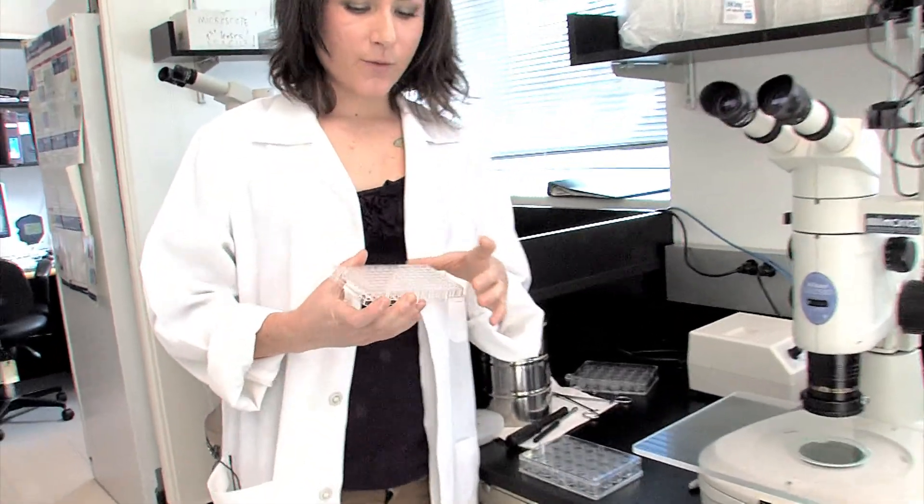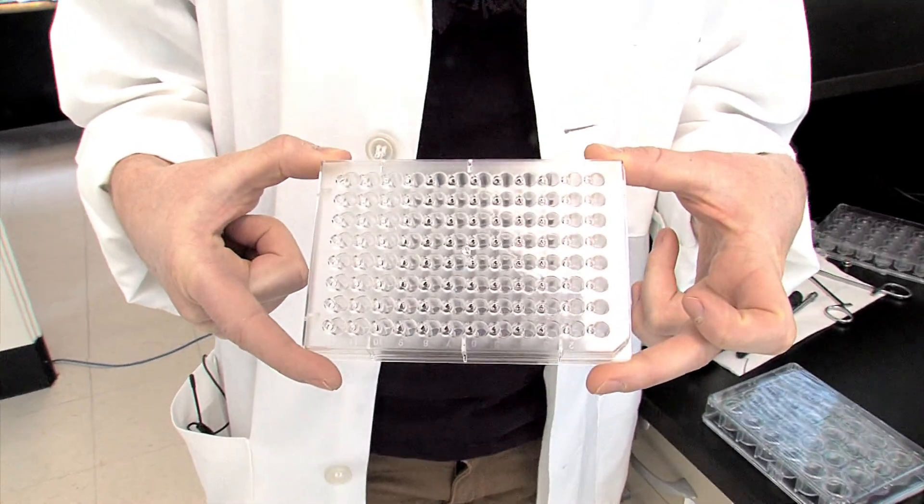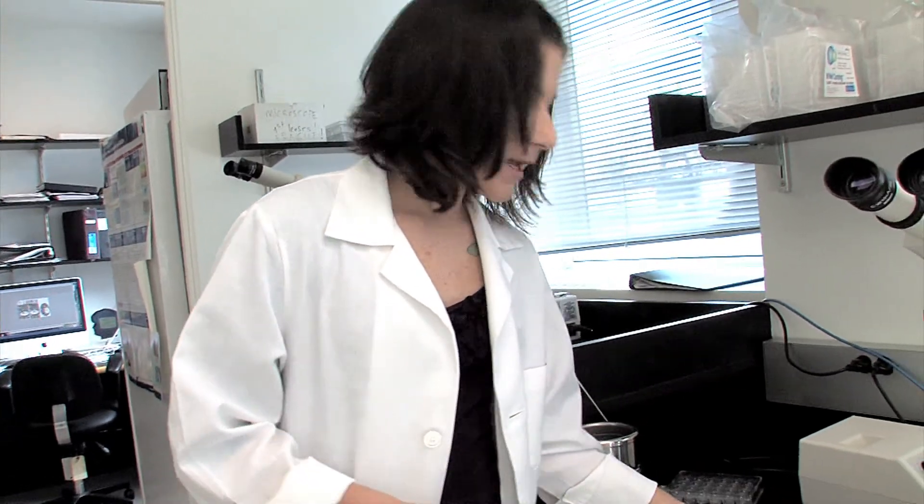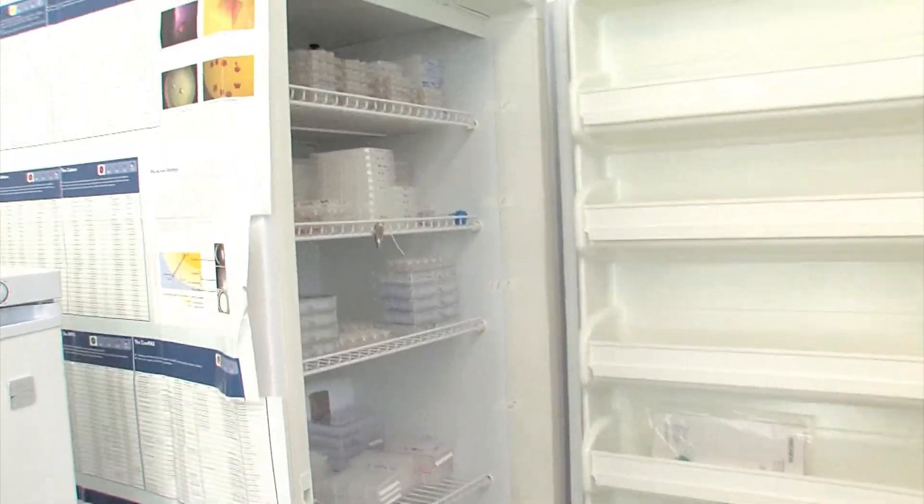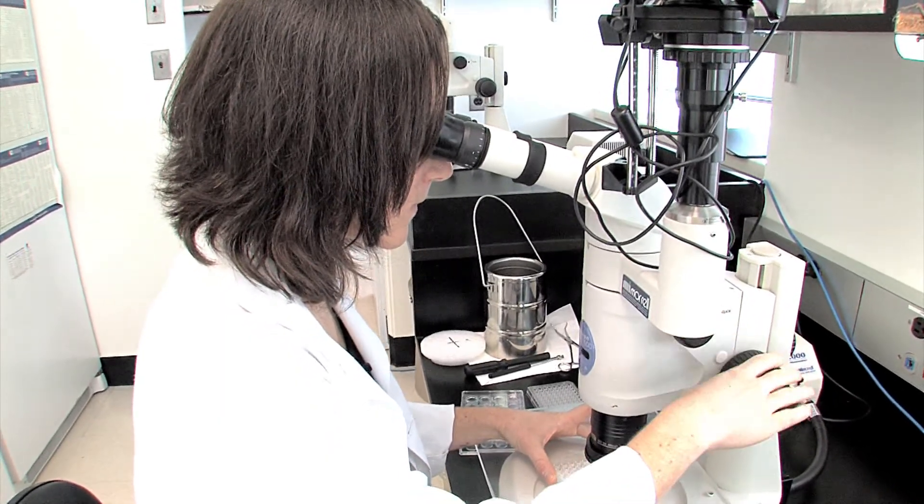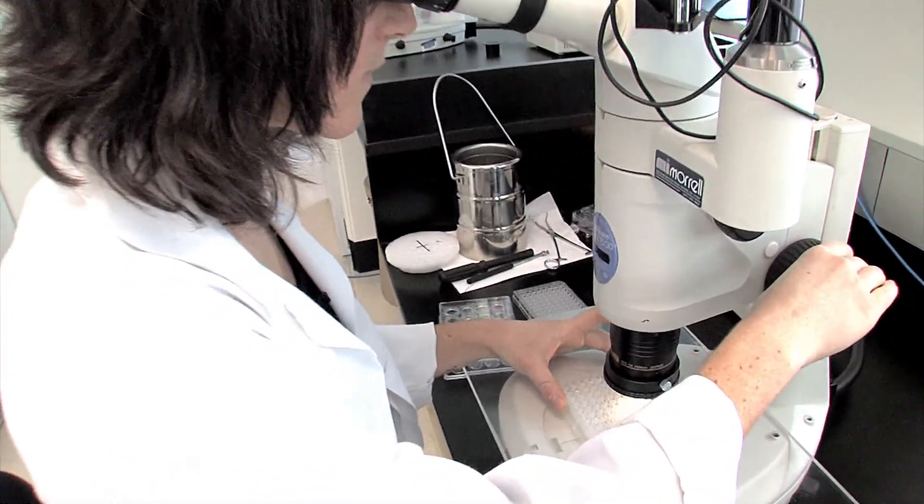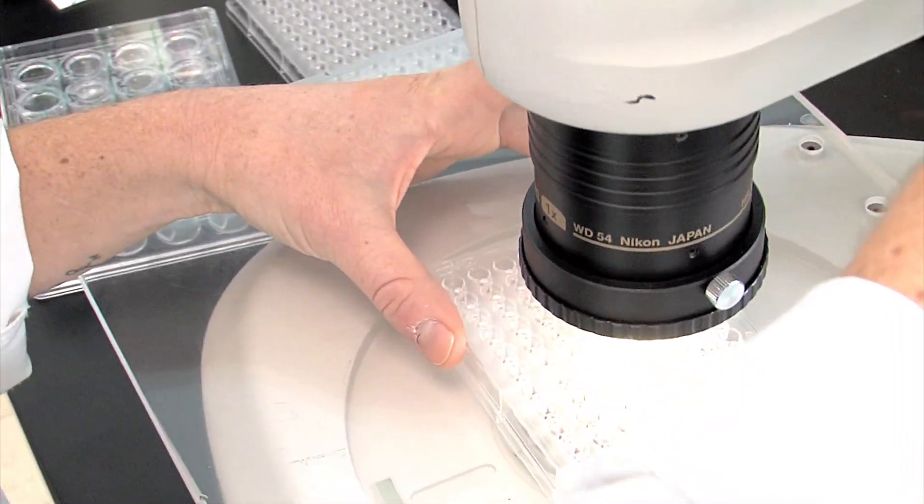We do this by screening through hundreds of different crystallization conditions in these 96-well plates, and we store them at various temperatures, either at 4 degrees or room temperature. Crystals then end up growing in these little wells on these plates. And we can look at these crystals under a microscope. Sometimes they're big enough to see with the naked eye, but most of the time they're so small that we need to use a microscope to see them.